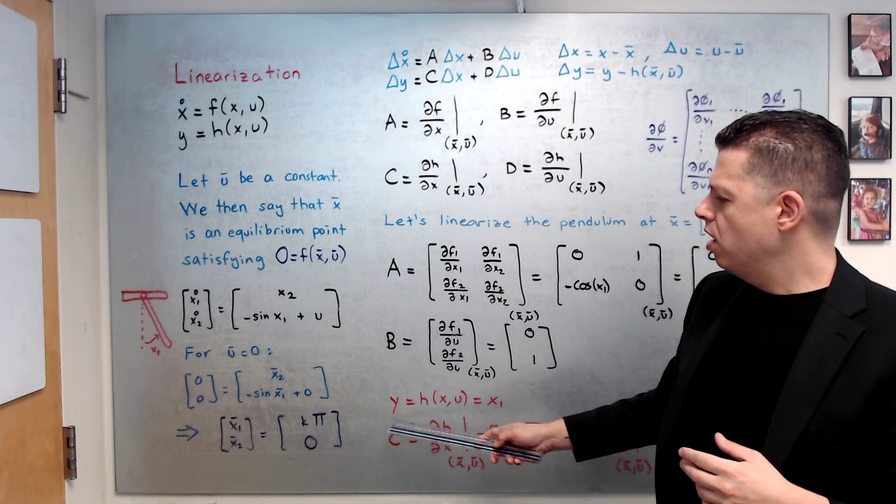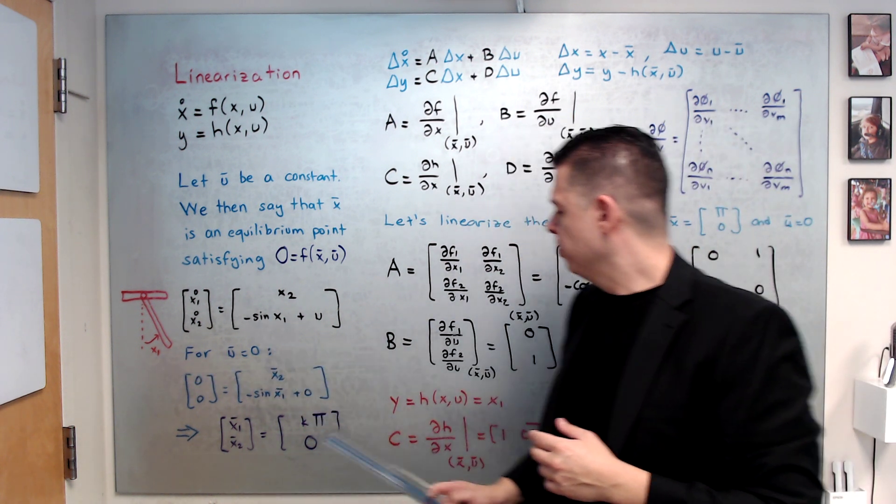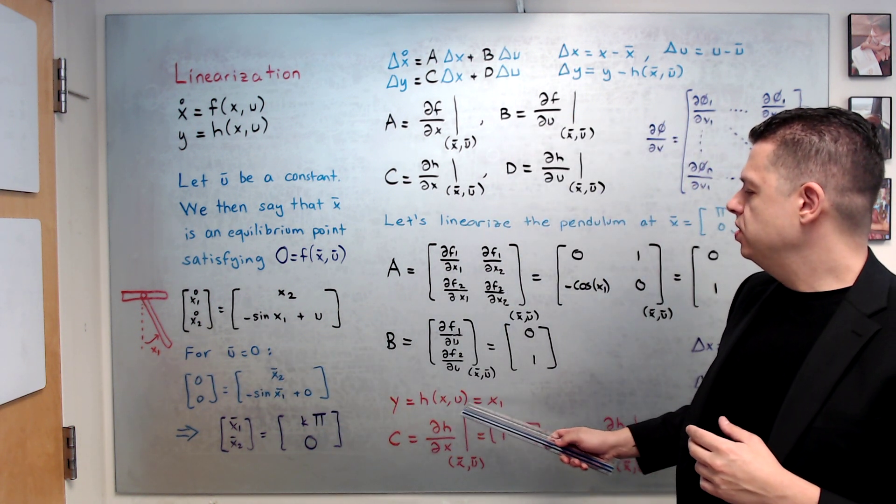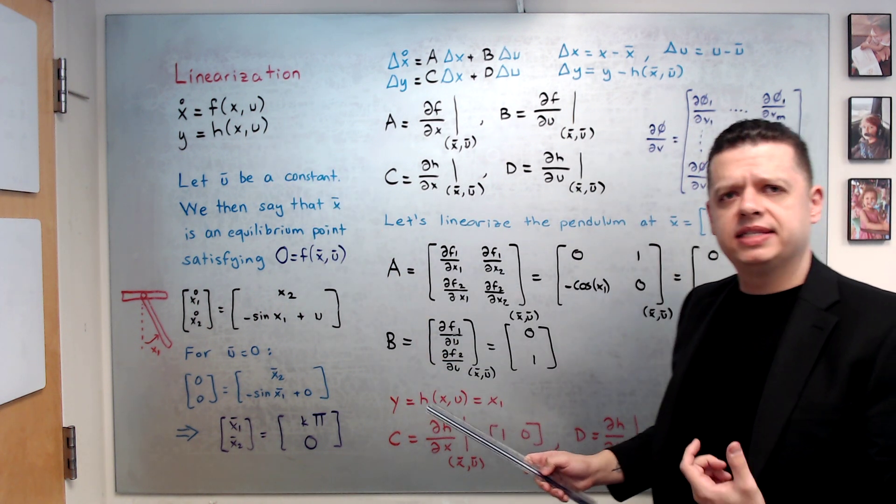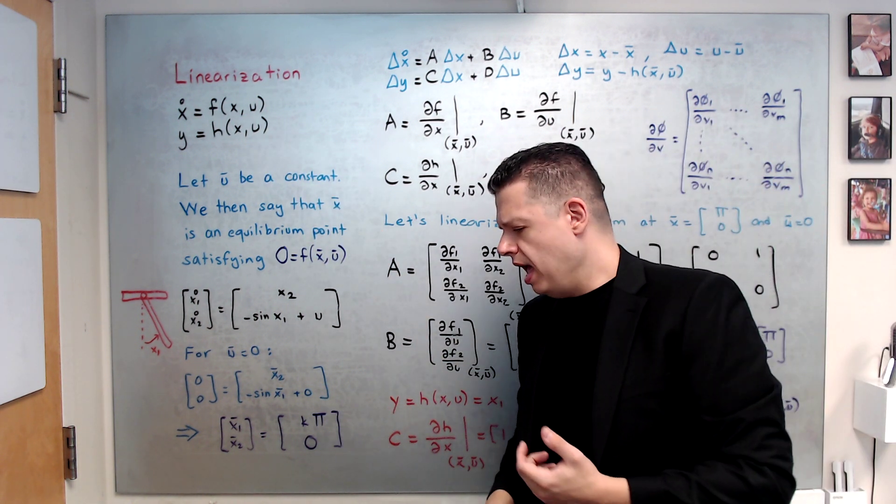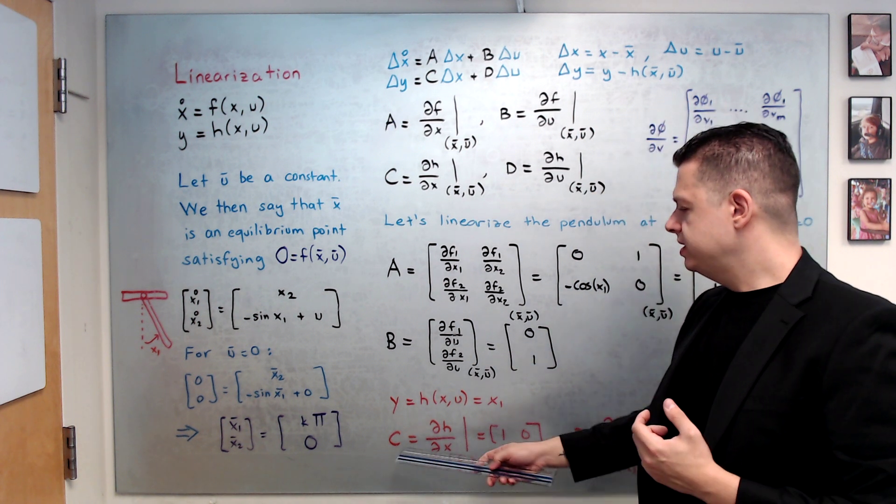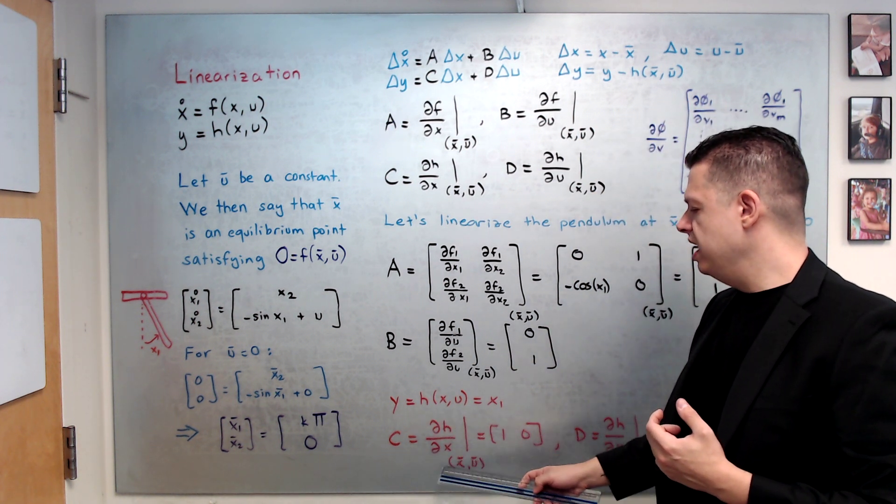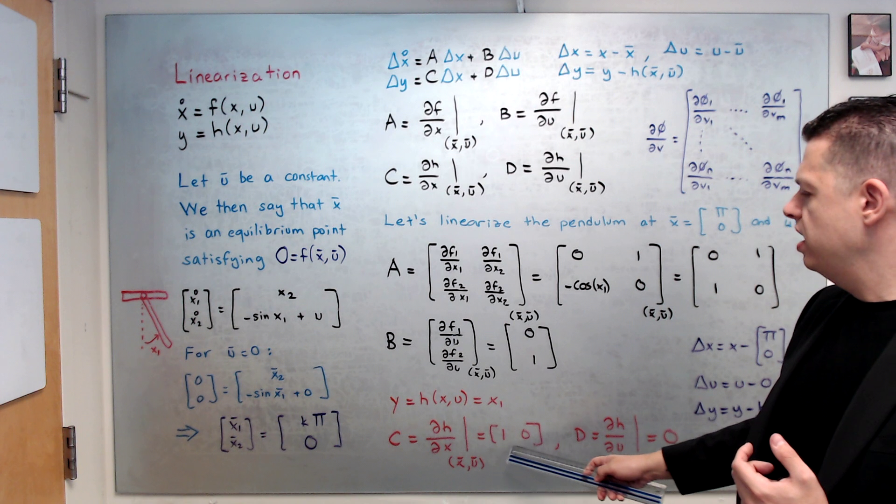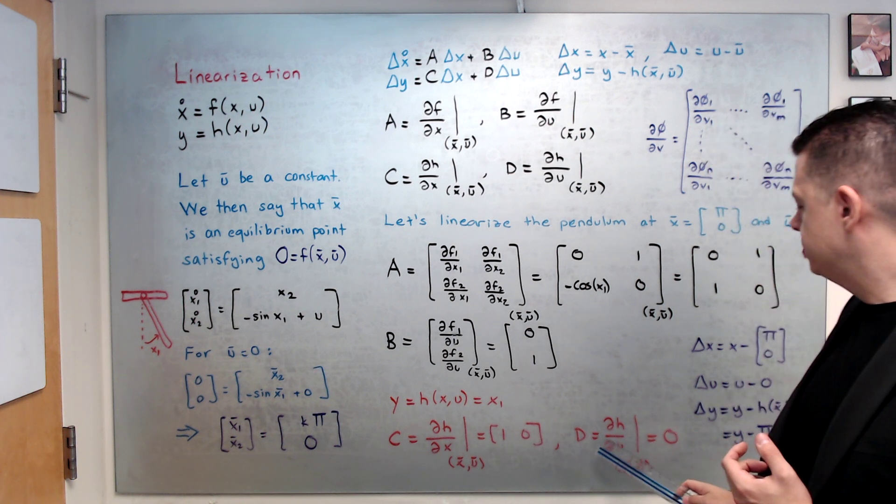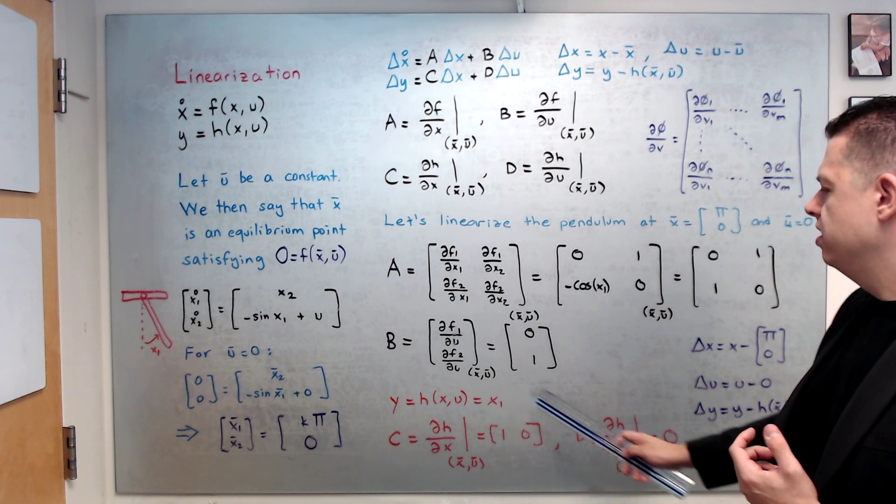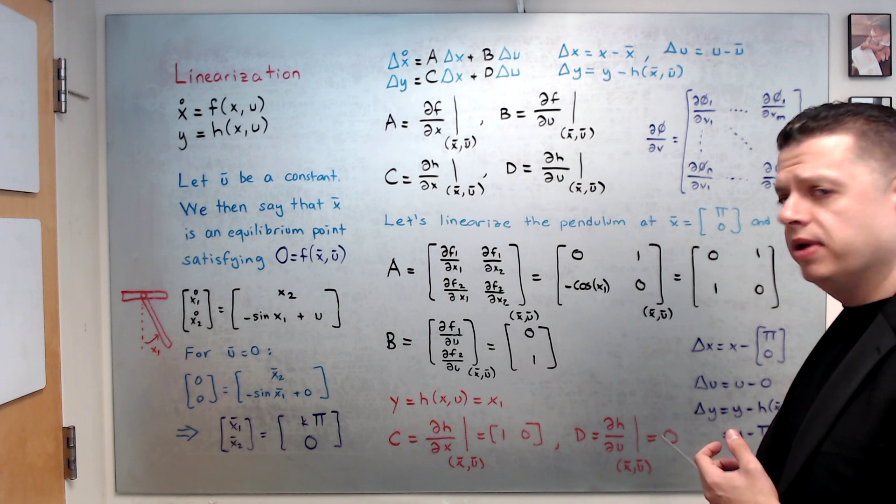And, although I didn't mention about an output here, let's say our output is the angle. So, h(x,u) is x1, the output of the system. Let's say we are measuring the angle of the pendulum. Then, c matrix becomes dh over dx in a similar fashion, 1 and 0. And, d matrix becomes dh over du. There is no dependence on u, so it becomes 0.